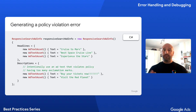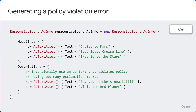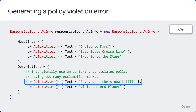So let's see how to request a policy violation exemption. In this case, just as we mentioned before, we are intentionally triggering a violation by creating a responsive search ad with too many exclamation marks in one of its description texts. Sending a mutate operation to create this ad is going to fail and the client library will throw an exception because the first description in this example is not valid.